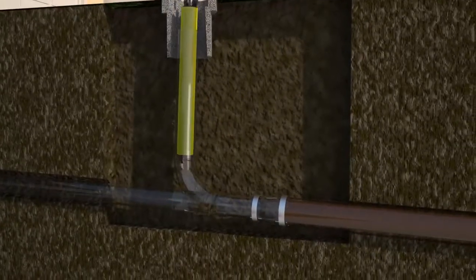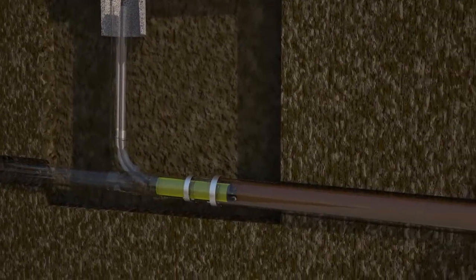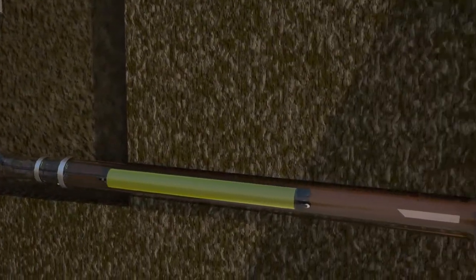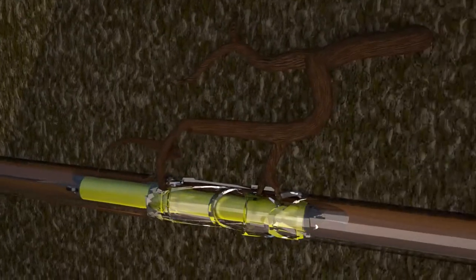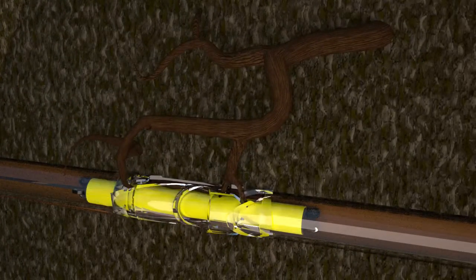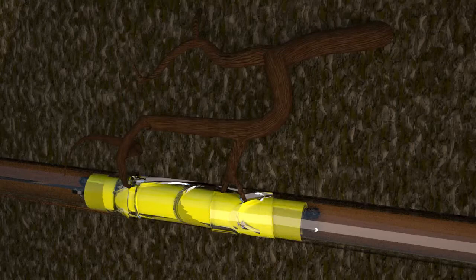A flexible packer device, dressed with a resin-saturated liner, is pushed into the broken sewer line until it reaches the break. The packer is inflated, pressing the liner against the inner walls of the pipe.